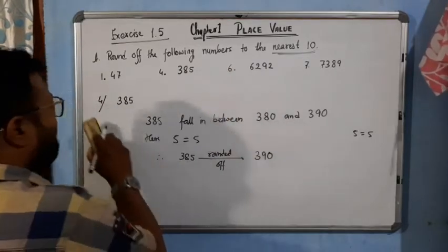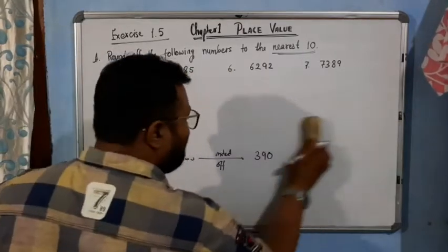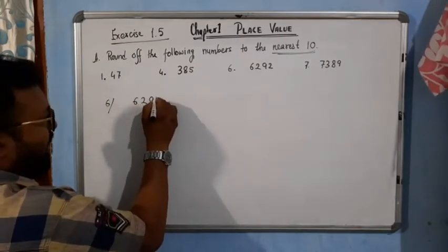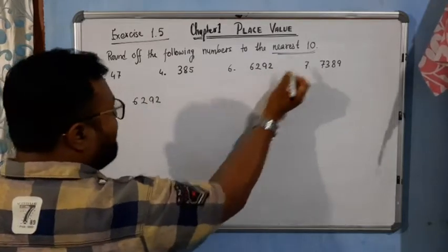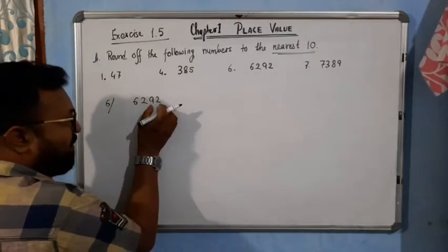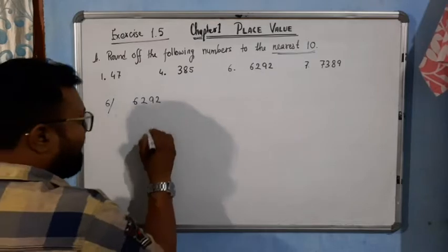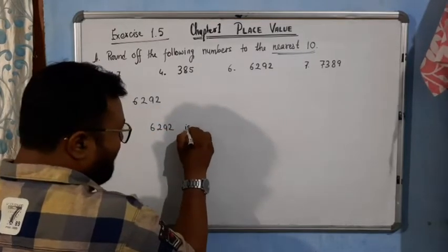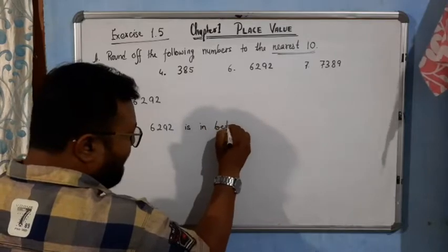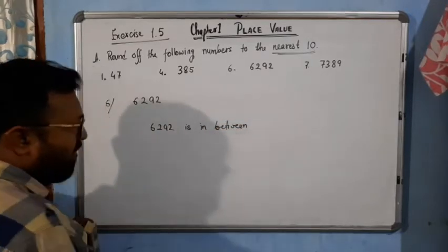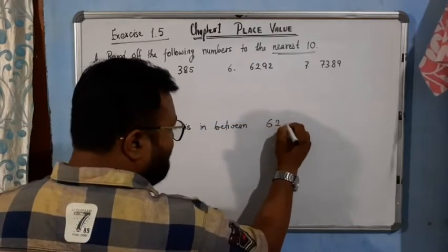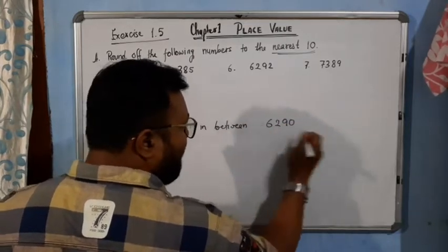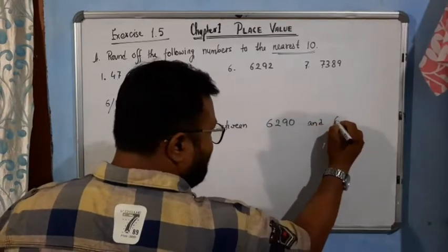Now come to question number 6. The number is 6292. Again, we are talking about nearest ten, so we will only see the last two digits. 6292 falls in between 6290 and the higher would be 6300, because if we add one more ten it becomes 100, making it 6300.